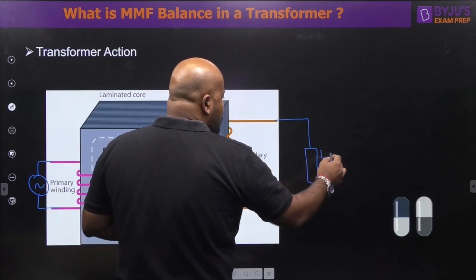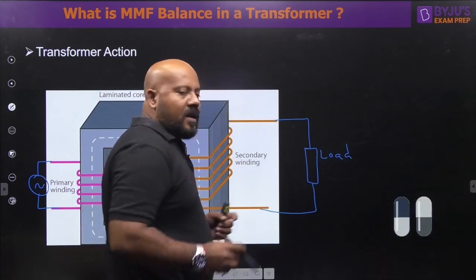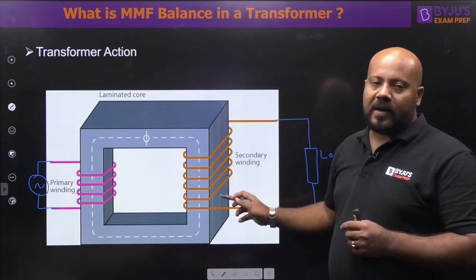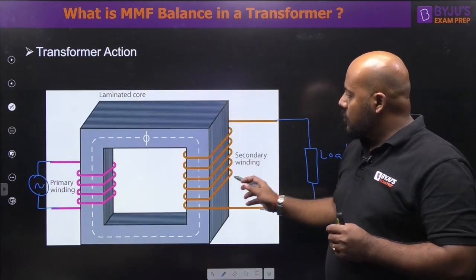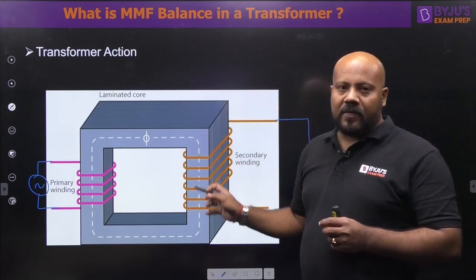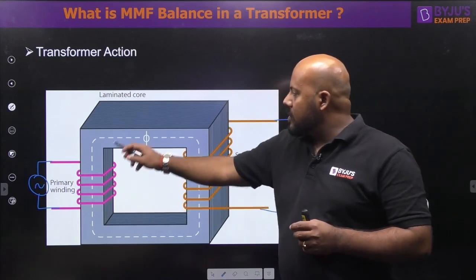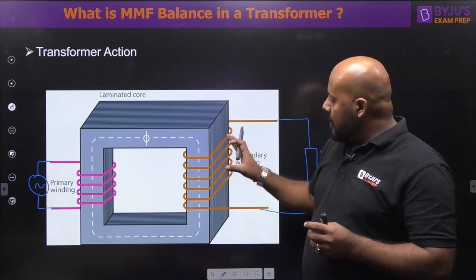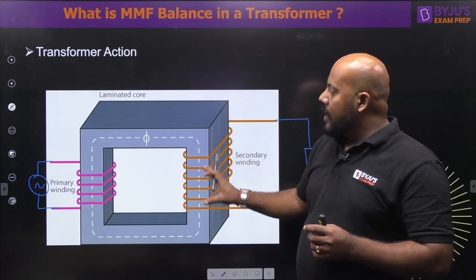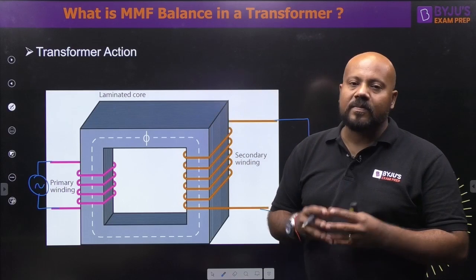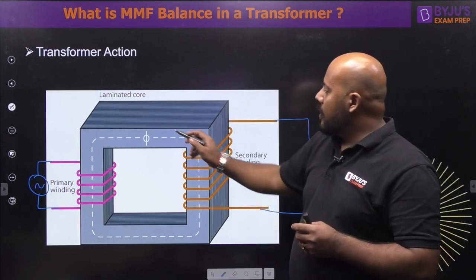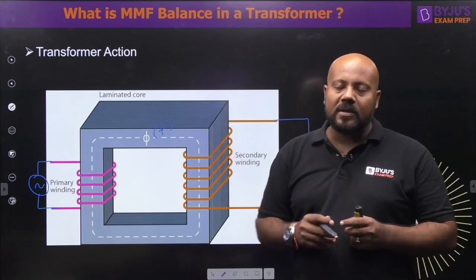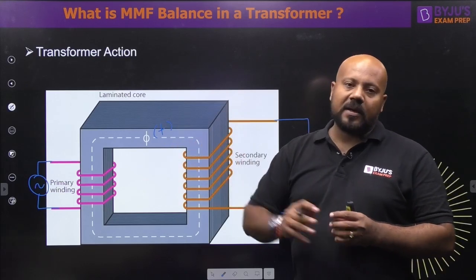If you observe carefully, there is no direct electrical connection between the primary winding and the secondary winding, even though these two windings are coupled with each other through the magnetic core. This magnetic core will have some magnetic flux, and this flux is going to be time-varying because the source of this flux — the alternating source — is itself time-varying.